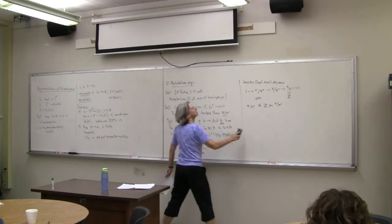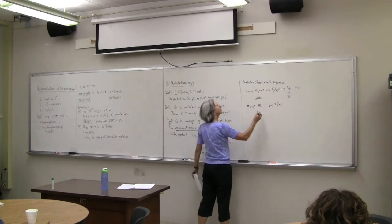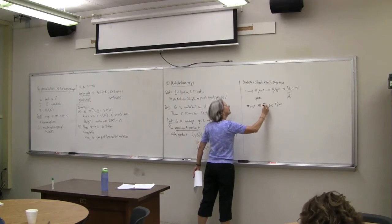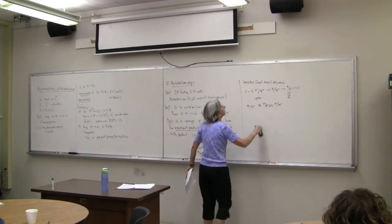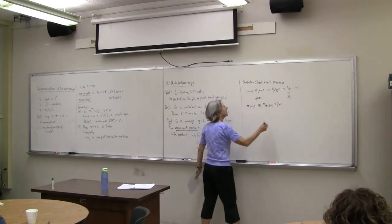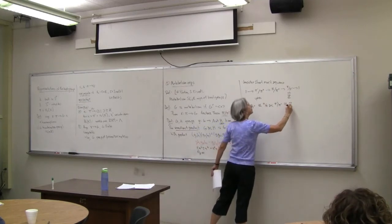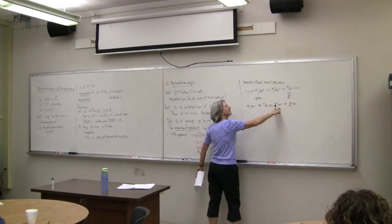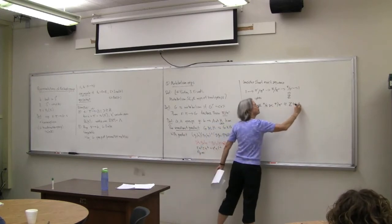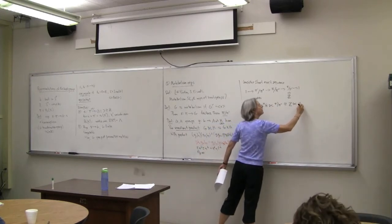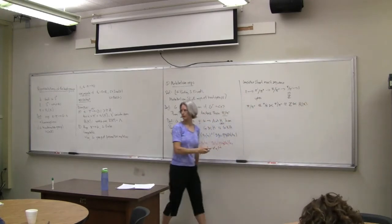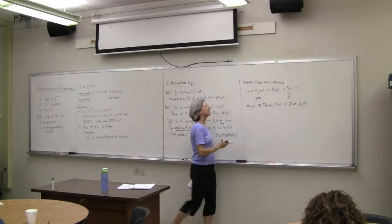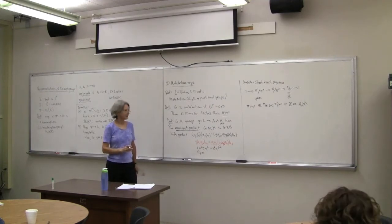Let me write it this way: it's a semi-direct product of π/π′ — which is isomorphic to ℤ — acting on π′/π″, which is the abelianization of the commutator subgroup, and that's just H₁. The maps in the exact sequence determine the automorphism that you get in the semi-direct product.